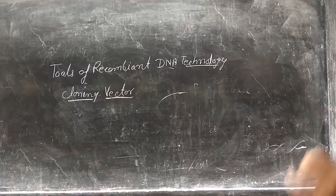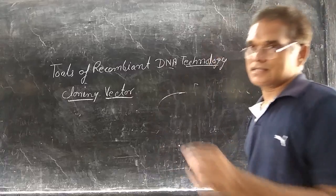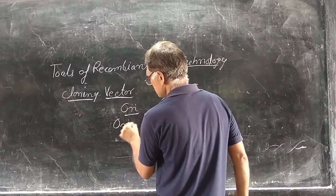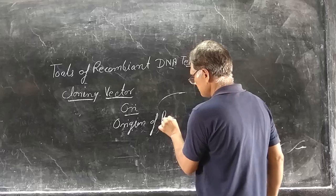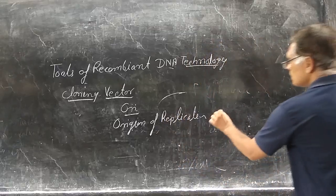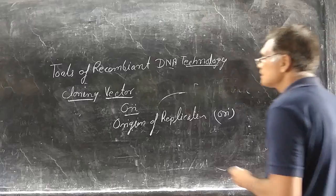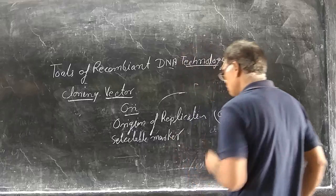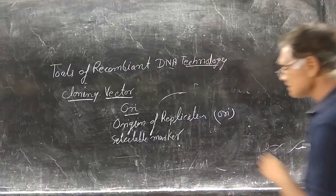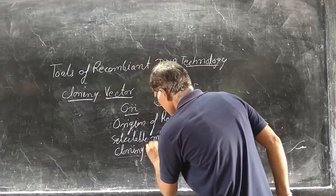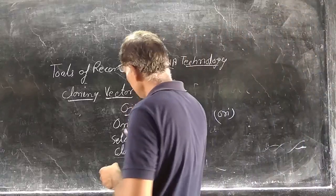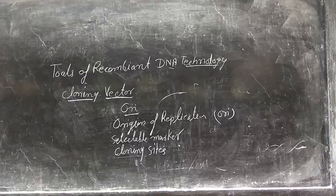The cloning vector requires the following parts: first is ORI — origin of replication. Second is selectable marker. These are the parts present in each and every cloning vector. What is ORI, what is selectable marker, and what else is required — we will study in the next class.